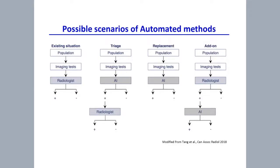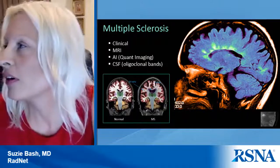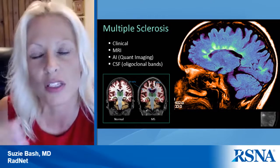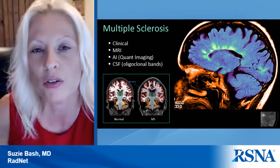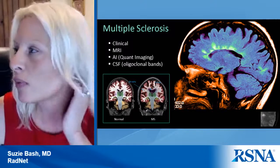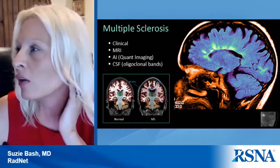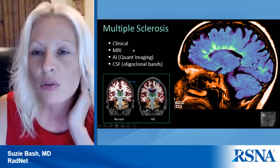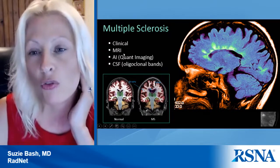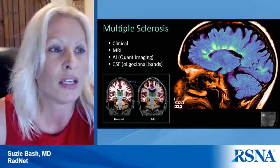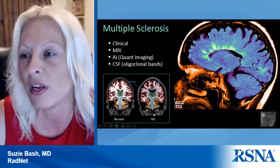Thank you very much Dr. Roca. Now Dr. Susie Bash will review the clinical experience related to the use of quantitative MRI, including how these tools impact efficiency and how to incorporate them into clinical practice. Multiple sclerosis is a debilitating and often progressive disease that affects younger adults, typically diagnosed between the ages of 20 to 49. The difficulty is that these patients often present with a highly variable clinical presentation with a broad range of symptoms, which is why MRI plays a very key role in the diagnosis and longitudinal follow-up of MS.